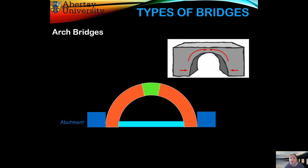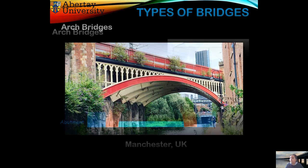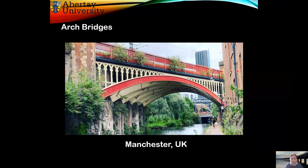So, types of bridges. There are a lot of types of bridges and they all use different methods of load distribution. One of these is called an arch bridge. As you can see in the picture, the forces are acting this way to hold the two parts of the bridge together — it's kind of gluing the bridge together. And that's a real-life example of a bridge from Manchester.